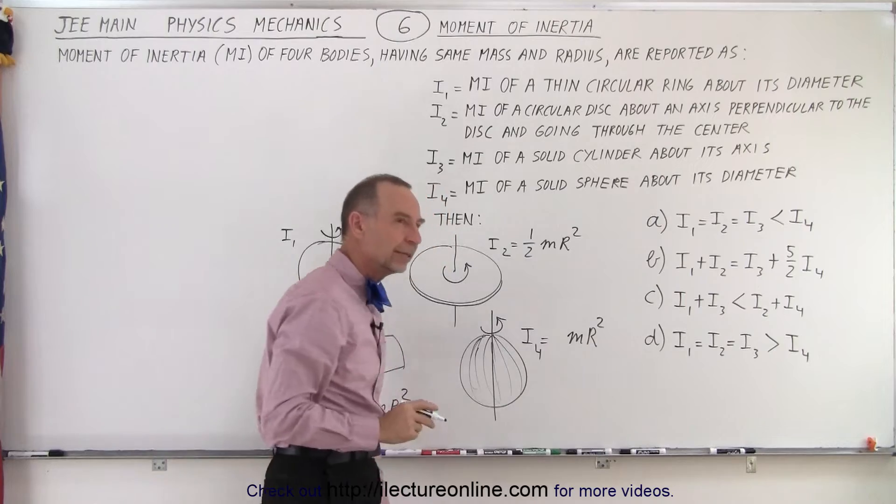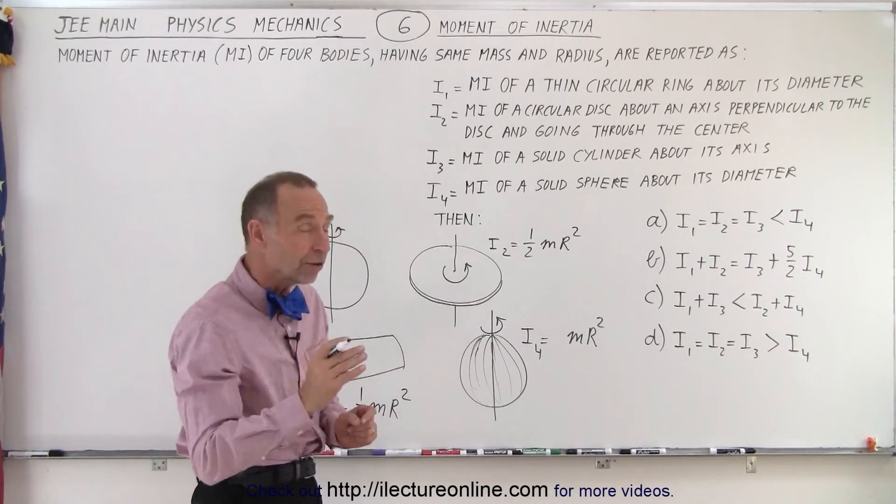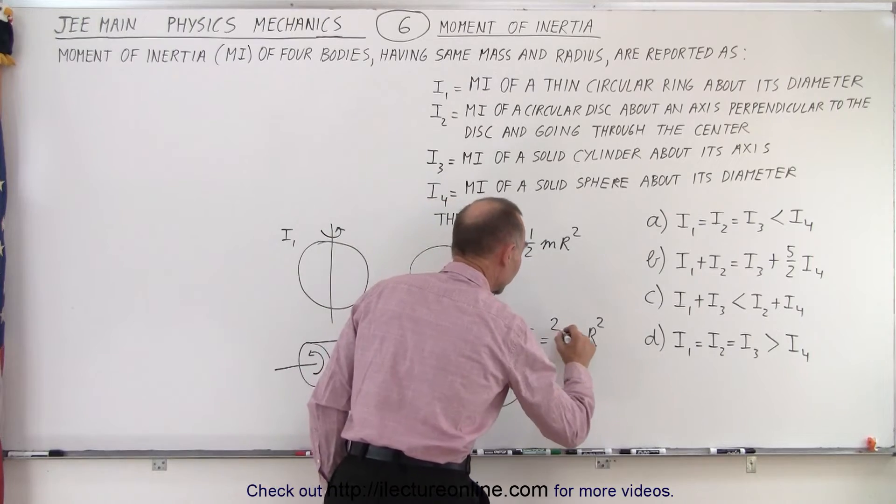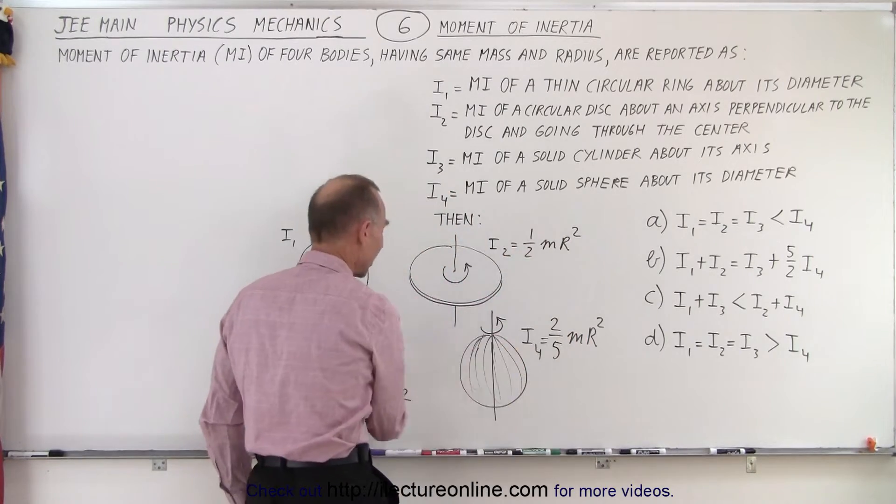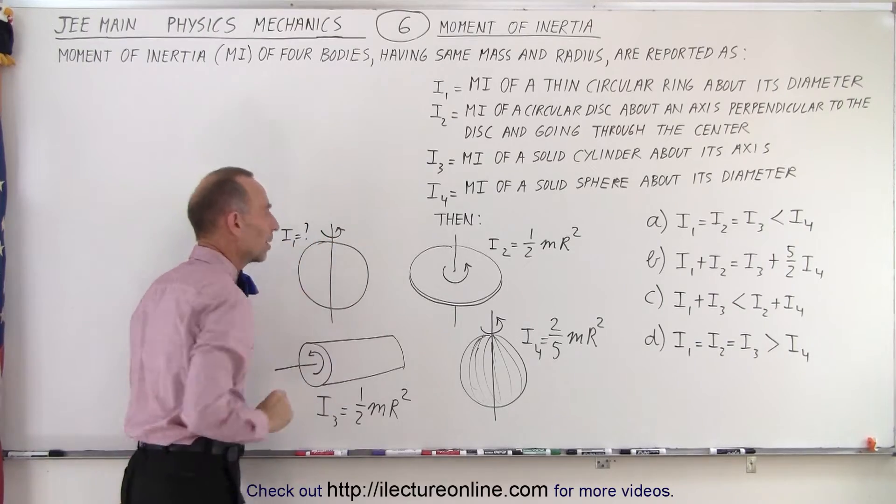Now for a hollow sphere it's a bigger number, it's two-thirds. For a solid sphere it's two-fifths. So hopefully we've memorized at least those three, and this one was a question mark.